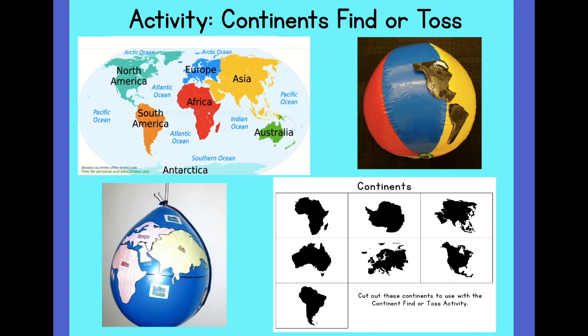Want an extra challenge? Label the oceans. If you do not have a balloon or ball, you can use construction paper and draw the continents, or use the continents from your packet and glue those down on construction paper. Once you have this done you're ready to play. Close your eyes, turn around three times, and point to your paper. Open your eyes and say the continent you landed on. It's like pin the tail on the donkey.